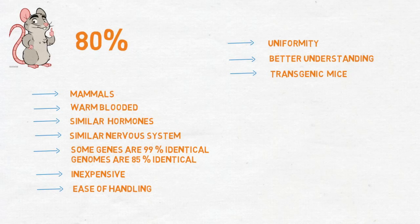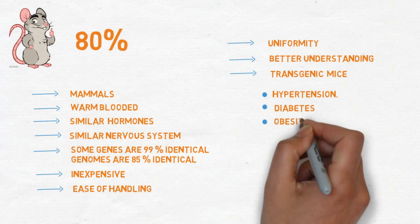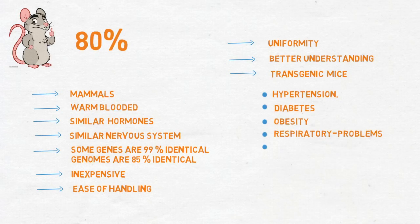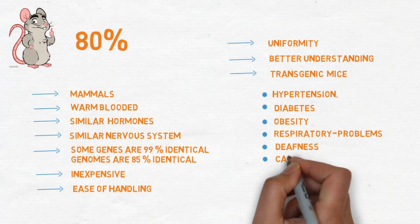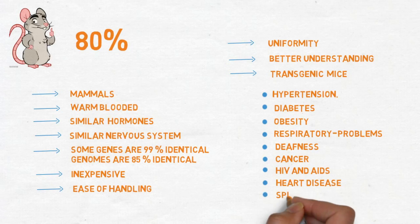Some examples of human disorders and diseases for which mice and rats are used as models include hypertension, diabetes, obesity, respiratory problems, deafness, cancer, HIV and AIDS, heart disease, spinal cord injuries. All these disadvantages resulted in greater usage of mice and rats.